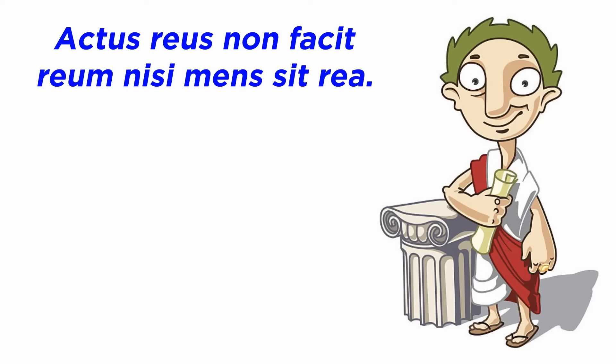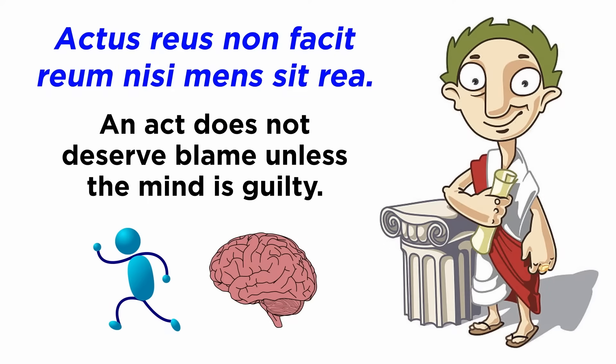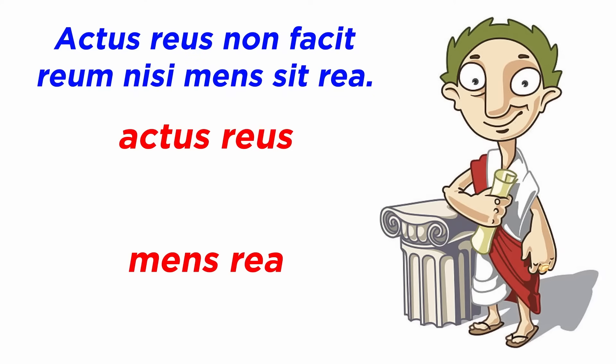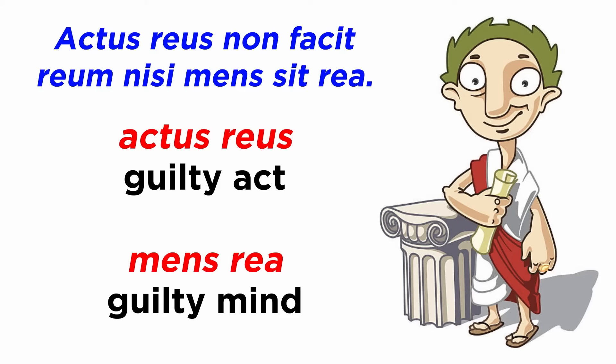The liability of a crime is expressed by the following Latin phrase: actus reus non facit reum nisi mens sit rea, which means an act does not deserve blame unless the mind is guilty. In it, there is an emphasis on the following two phrases: actus reus and mens rea. In short, actus reus means guilty act and mens rea means guilty mind.